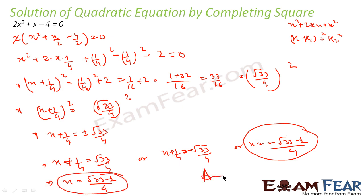So the two values of x are (√33 - 1)/4 or (-√33 - 1)/4. Here also it's very simple — I just wrote the equation in the form x² + 2kx and got the answer.